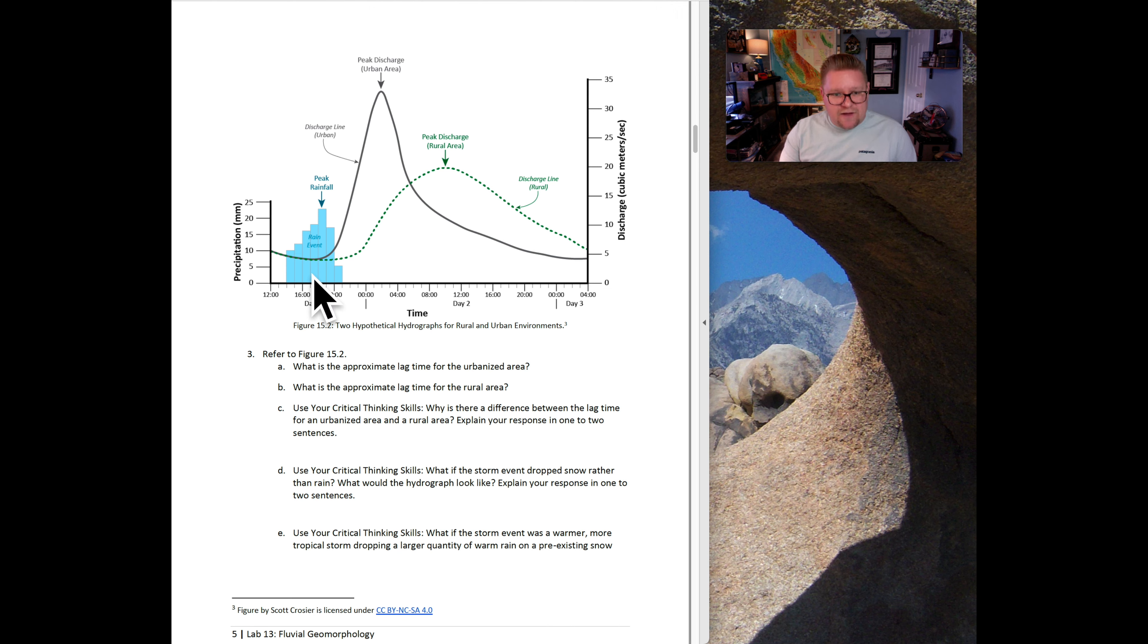This bar graph within the hydrograph represents the rain event. We can see that as we go over time, this is day one, day two, day three. This is a really large storm event and very large river system we're evaluating. We're able to see that immediately it peaks very high. The lag time is very short from the peak of rainfall to the peak of discharge. But what do you think slows this down? Why does it not peak as high for the rural area?